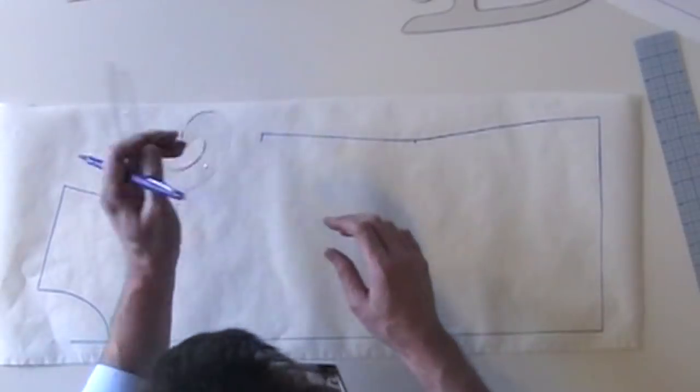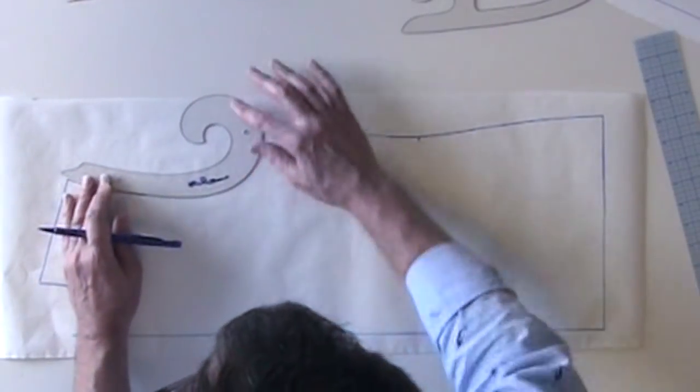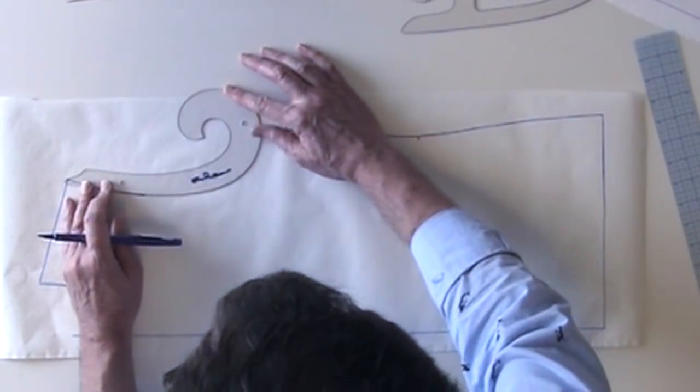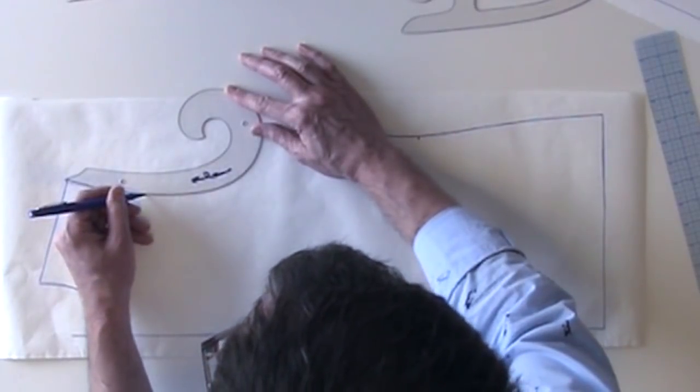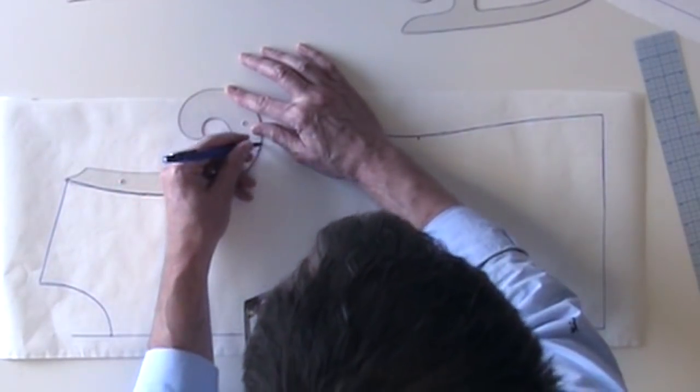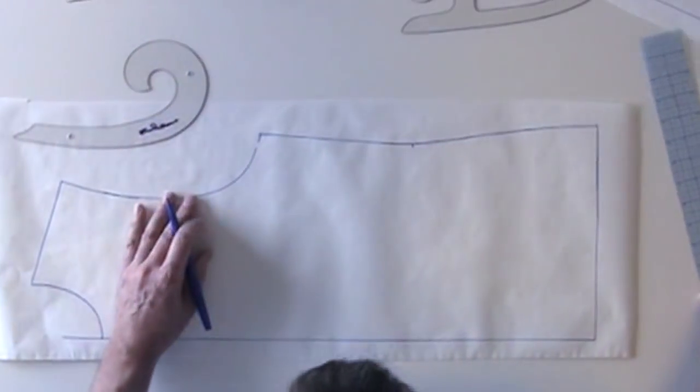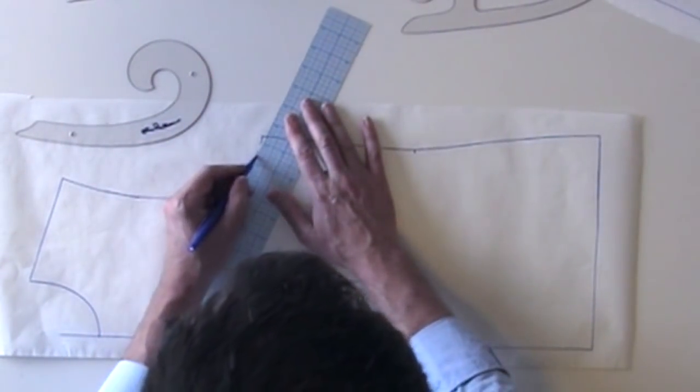I'm going to now use my French Curve to draw my armhole, just blend it a little at the bottom.